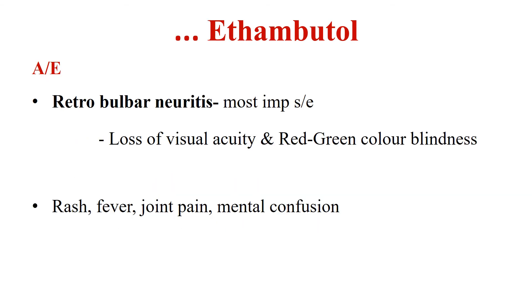The most significant side effect associated with ethambutol is retrobulbar neuritis, which is a type of optic neuritis that manifests as loss of visual acuity and red-green color blindness. Other side effects are rashes, fever, joint pain, and mental confusion.